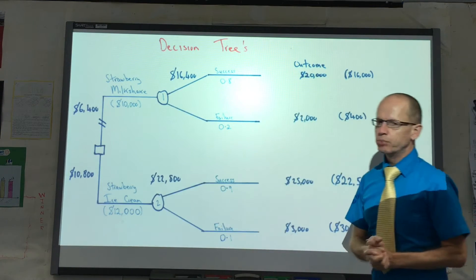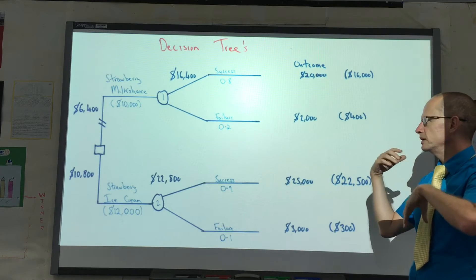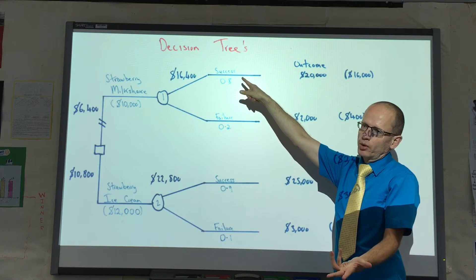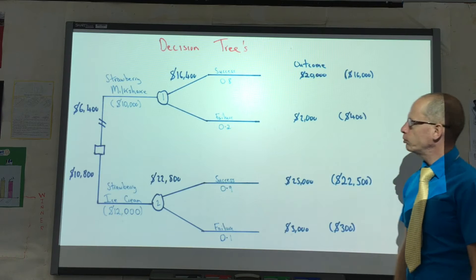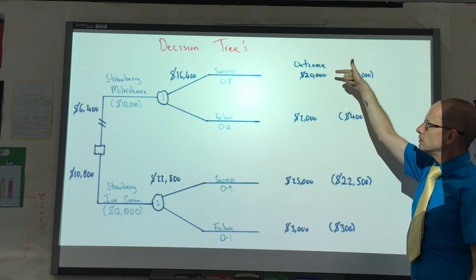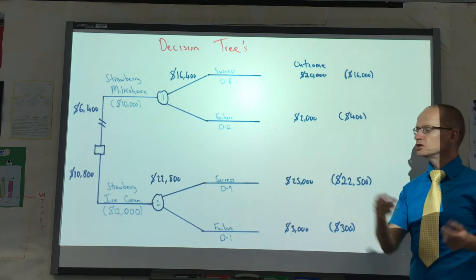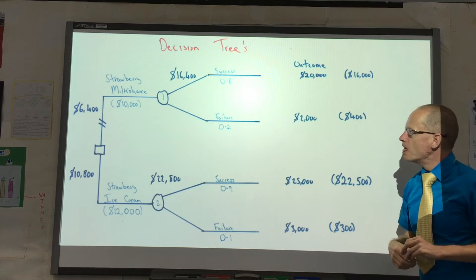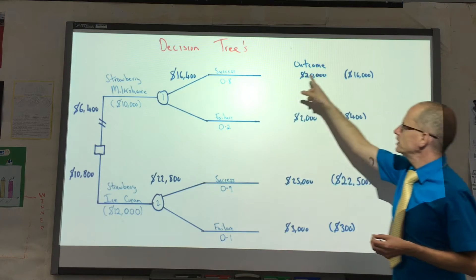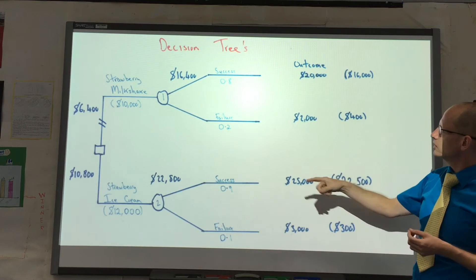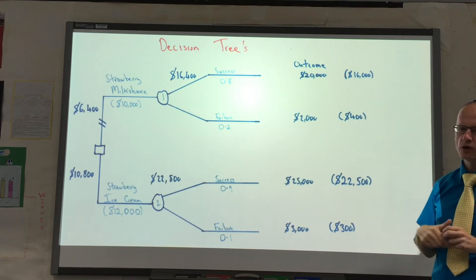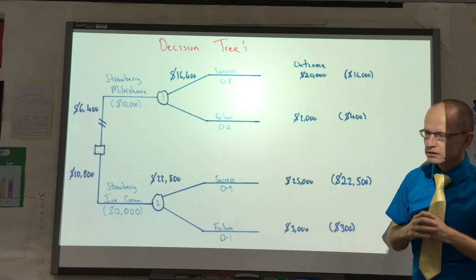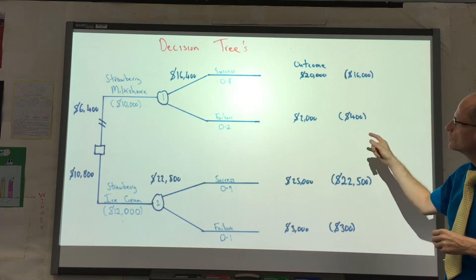The circle represents the probability. So there's a probability of the strawberry milkshake being a success or a failure. I've estimated it as being 0.8 or 20%. The outcome if it's a success is $20,000. The outcome if it's a failure I've estimated as being $2,000. Then what we do is take the 0.8 times $20,000 gives us $16,000. 0.2 times $2,000 gives us $400. So the expected revenues from developing the strawberry milkshake would be $16,400.